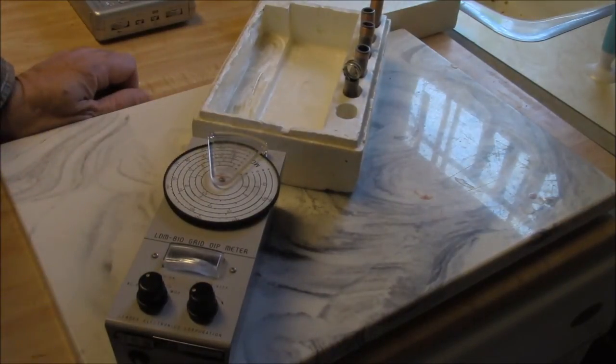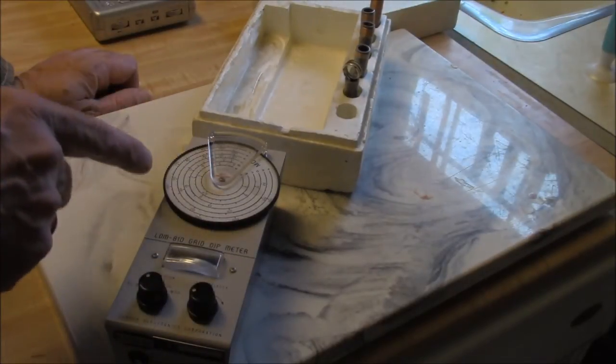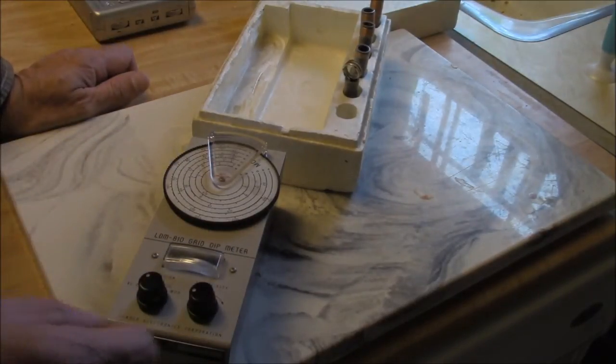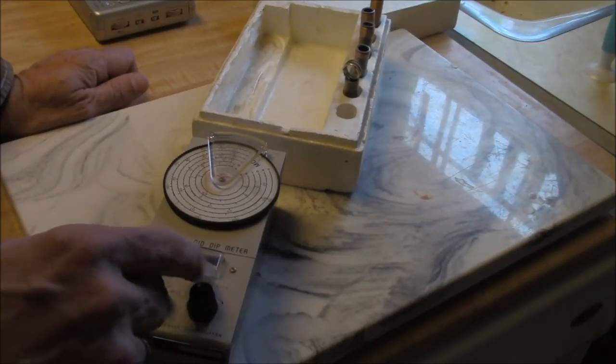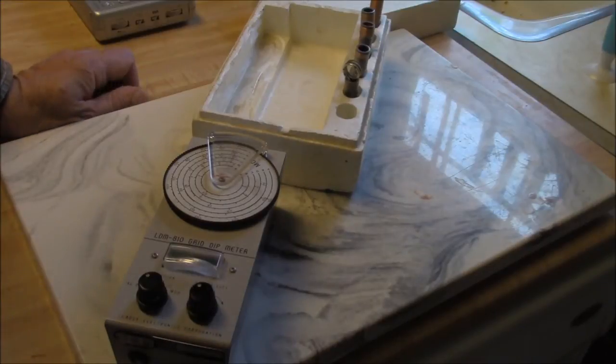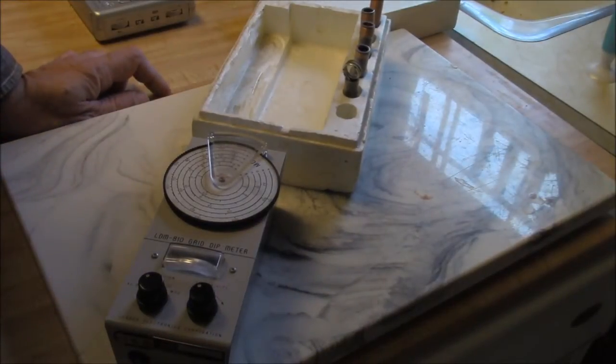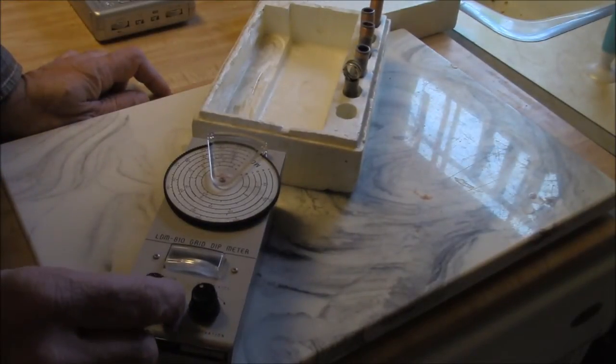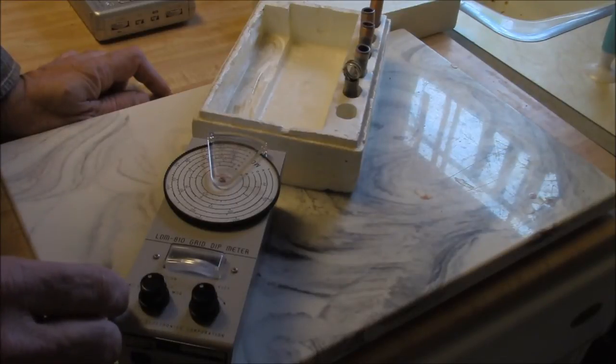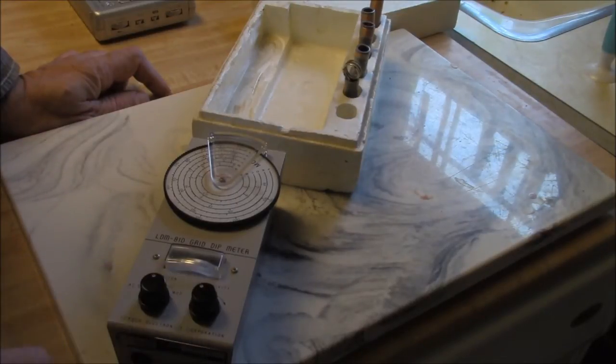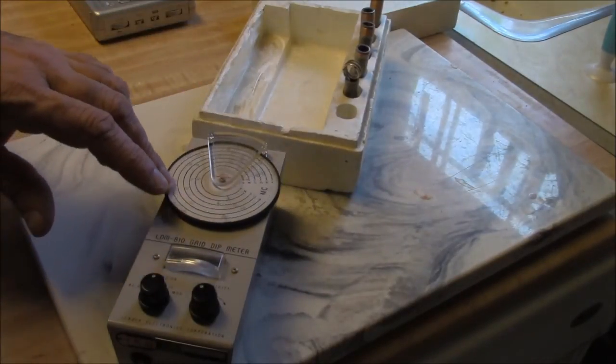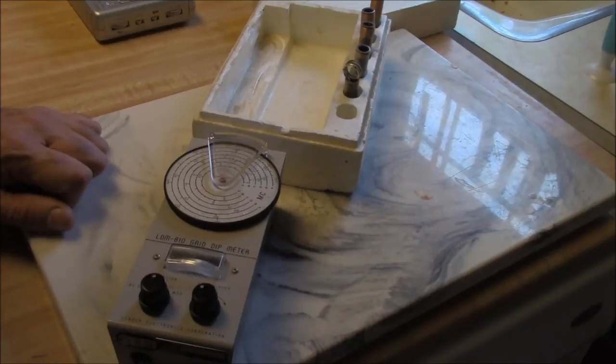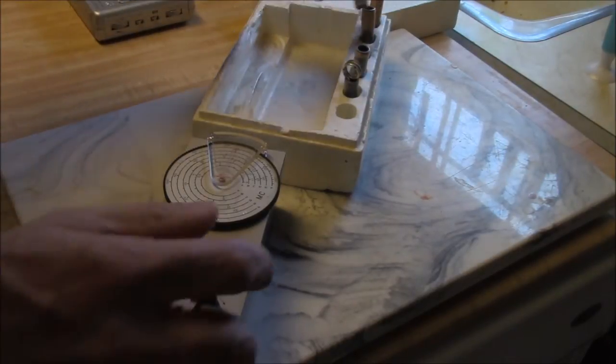Basically what a grid dip meter is, is an oscillator that's reasonably calibrated. You can also adjust the amount of oscillation and there's a little meter to show you the amount of current. There are also some other functions that are in the grid dip meter, one of them is the diode mode or the detector mode, and you can use it as a rudimentary receiver.